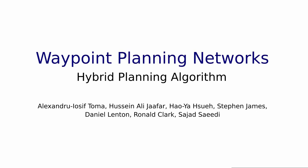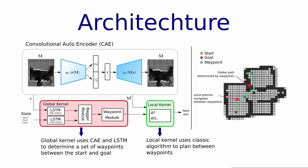This paper presents Waypoint Planning Networks, WPN. WPN has a global kernel that uses a convolutional autoencoder and LSTMs to determine a set of waypoints between the start and goal points. Then the local kernel uses a classic algorithm such as A-star to plan paths between the waypoints.